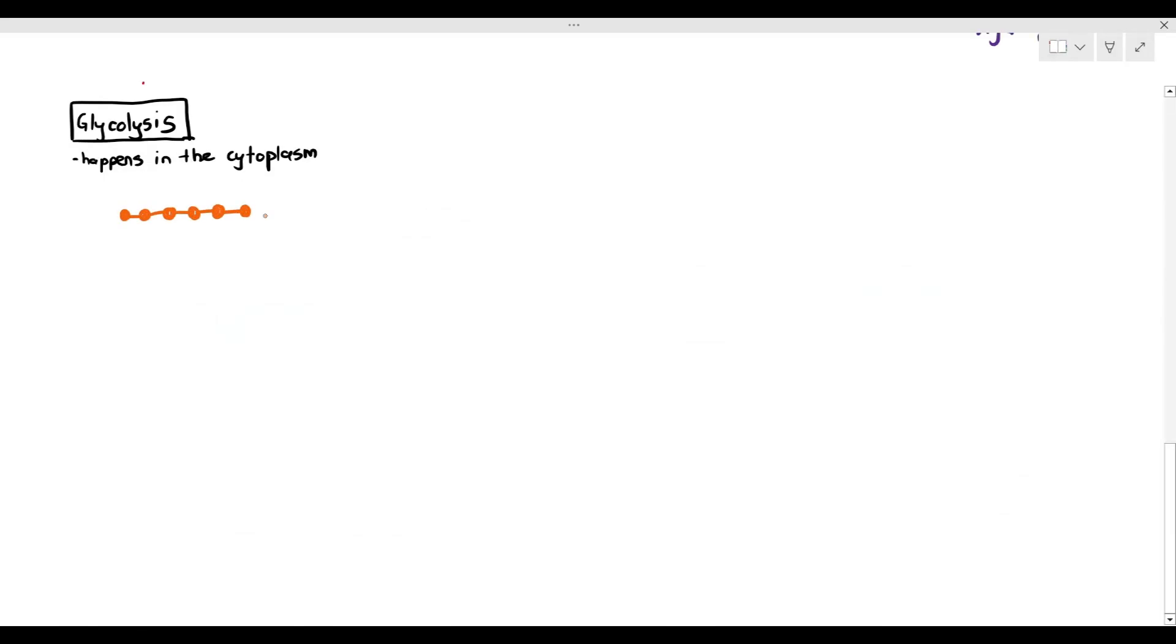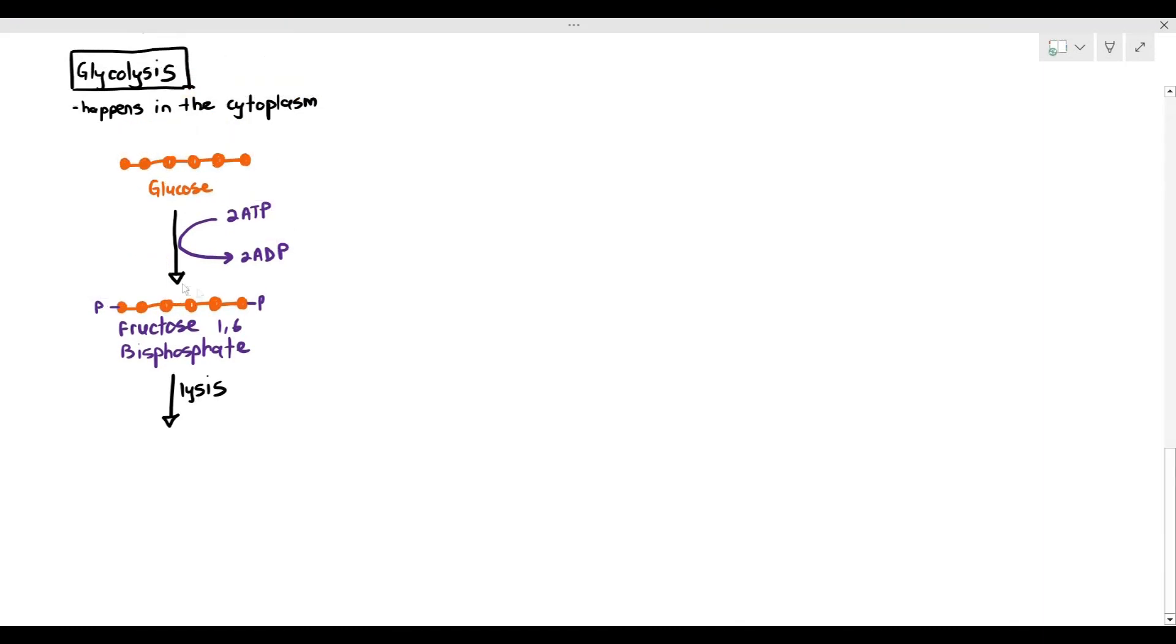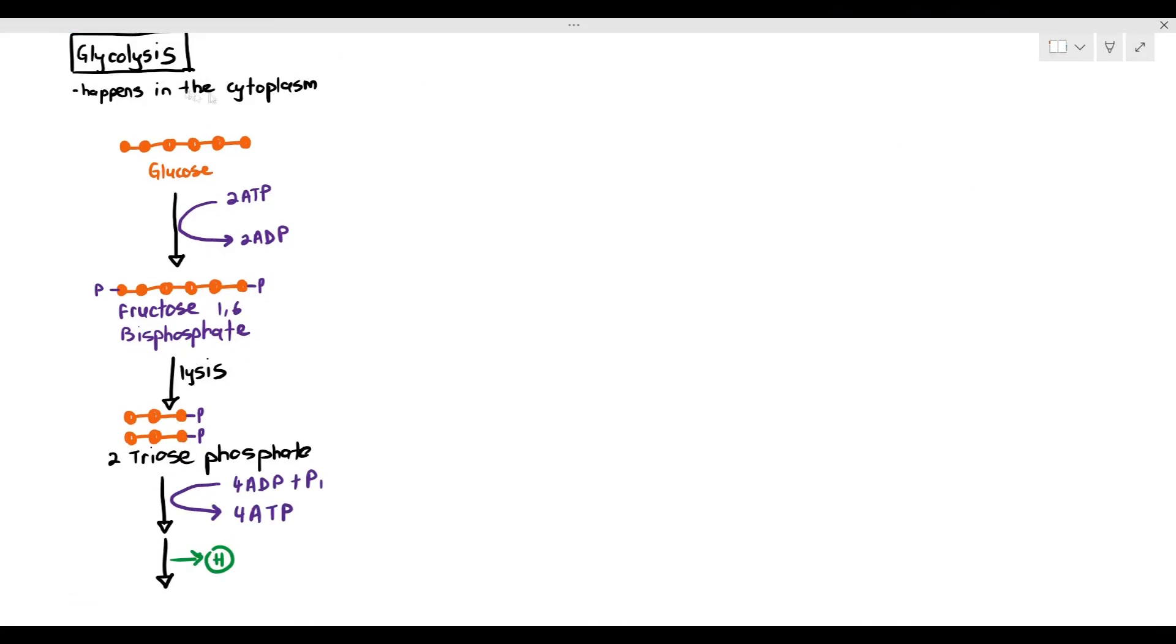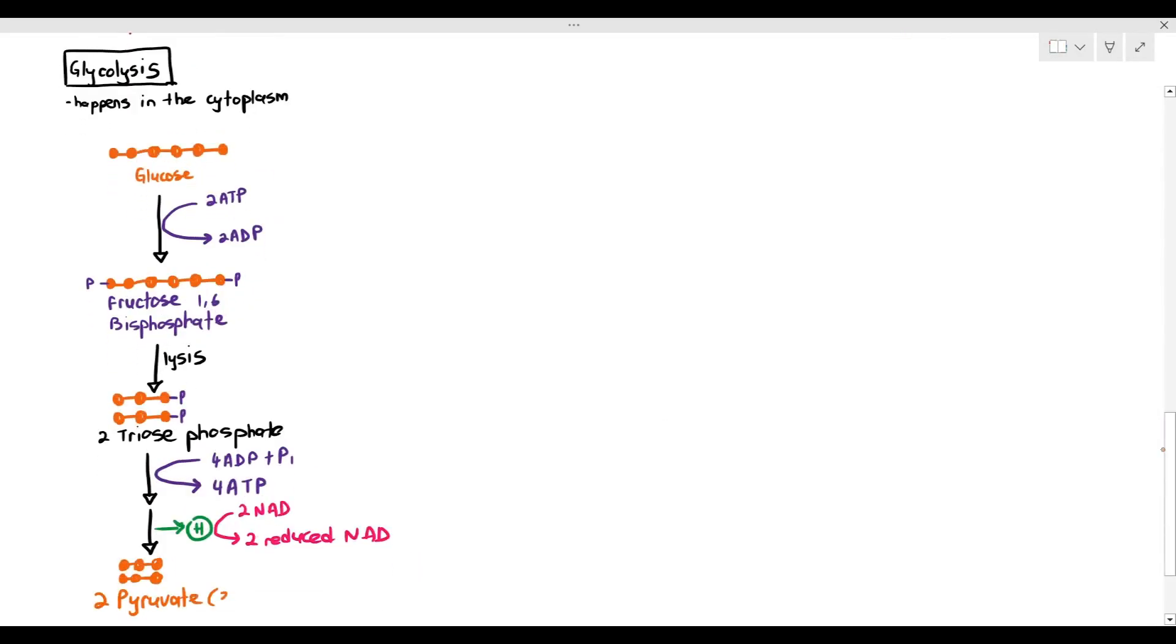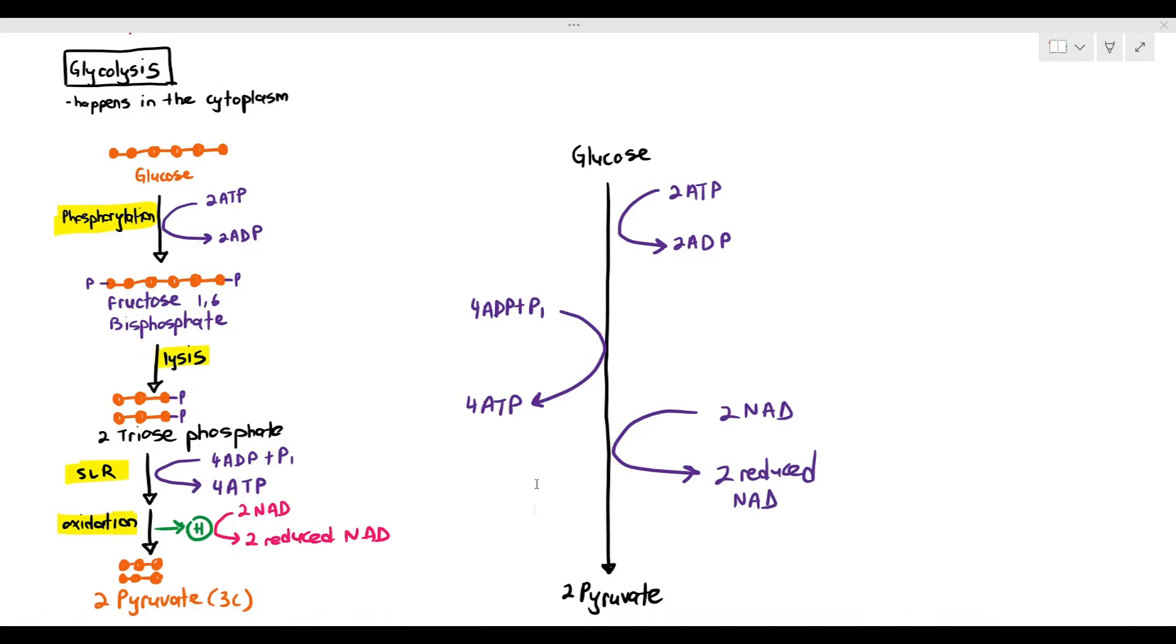In summary, for glycolysis, the glucose molecule is phosphorylated using two ATP. You must know the reason why—because glucose is too stable. We phosphorylate it by spending two ATP to make it more reactive. It becomes fructose 1,6-bisphosphate, which will break down into triose phosphates. The triose phosphates will then undergo substrate-linked reaction and oxidation to produce four ATP molecules and two reduced NAD. The end product of glucose, when it's broken down, is two pyruvate molecules, and each of the pyruvates are just three carbon. In a nutshell, you have broken glucose down into half to become pyruvate, released some energy to get ATP, and released some hydrogen to get reduced NAD. That is what glycolysis is all about.